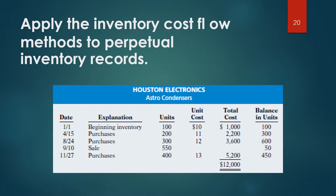Applying inventory cost flow methods to perpetual inventory records: companies using a perpetual inventory system can use any of the inventory cost flow methods described in the chapter — FIFO, LIFO, and Average Cost. To illustrate, we use the data in Illustration 6A-1 for Houston Electronics Astro Condensers.